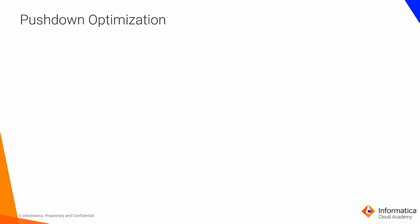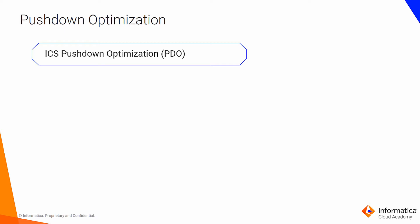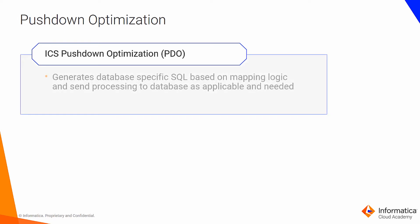Pushdown optimization, or PDO, is a feature in which a mapping can be converted into SQL code and executed on the database. This process generates database-specific SQL based on the mapping logic and sends processing to the database as applicable. This process is useful when we deal with huge volumes of data from the source. Sometimes, instead of reading all the data to the Informatica Cloud server, it might be useful to do some of the transformations — such as filtering, aggregation, and joining — on the database itself, and then write the final output to the target.